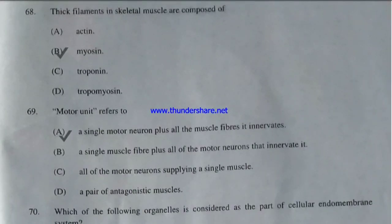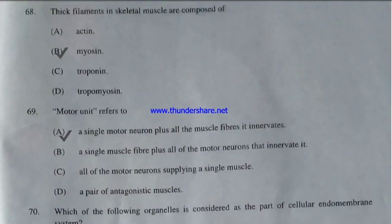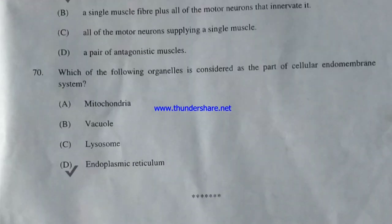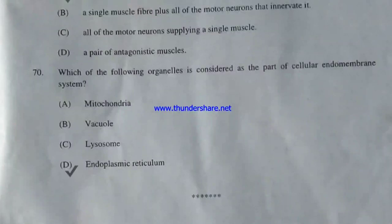Thick filaments in skeletal muscle are composed of — actin, myosin, troponin, or tropomyosin? The correct answer is myosin. Motor unit refers to — a single motor neuron plus all muscle fibers it innervates, a single muscle fiber plus all motor neurons that innervate it, all motor neurons supplying a single muscle, or a pair of antagonistic muscles? The correct answer is option A — a single motor neuron plus all the muscle fibers it innervates.